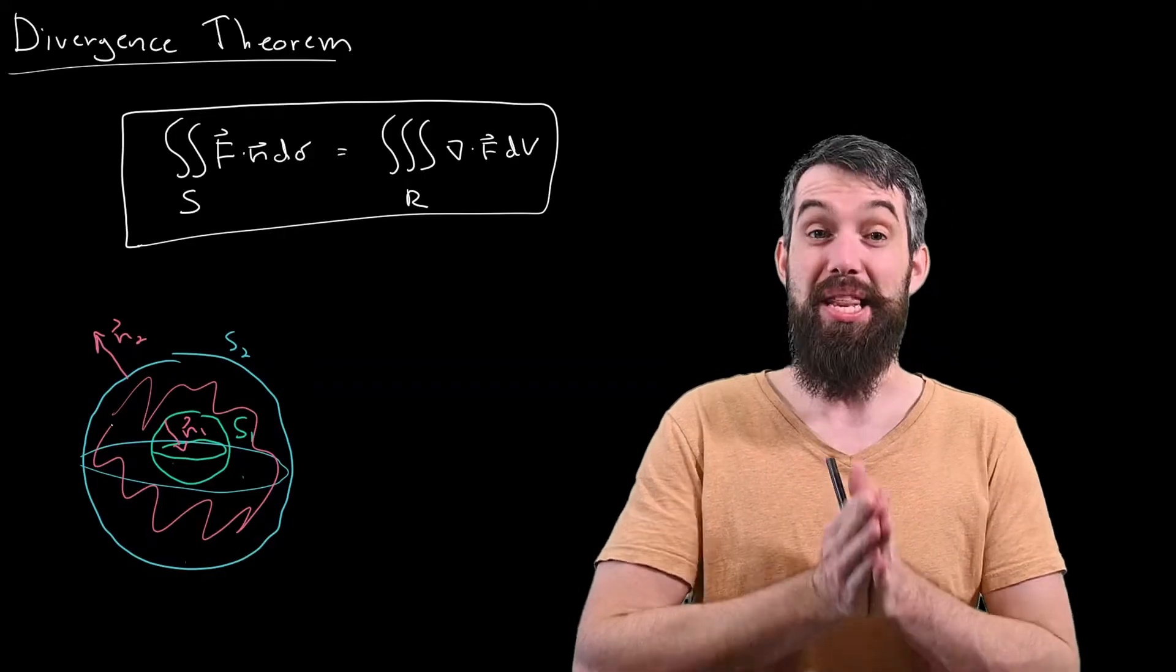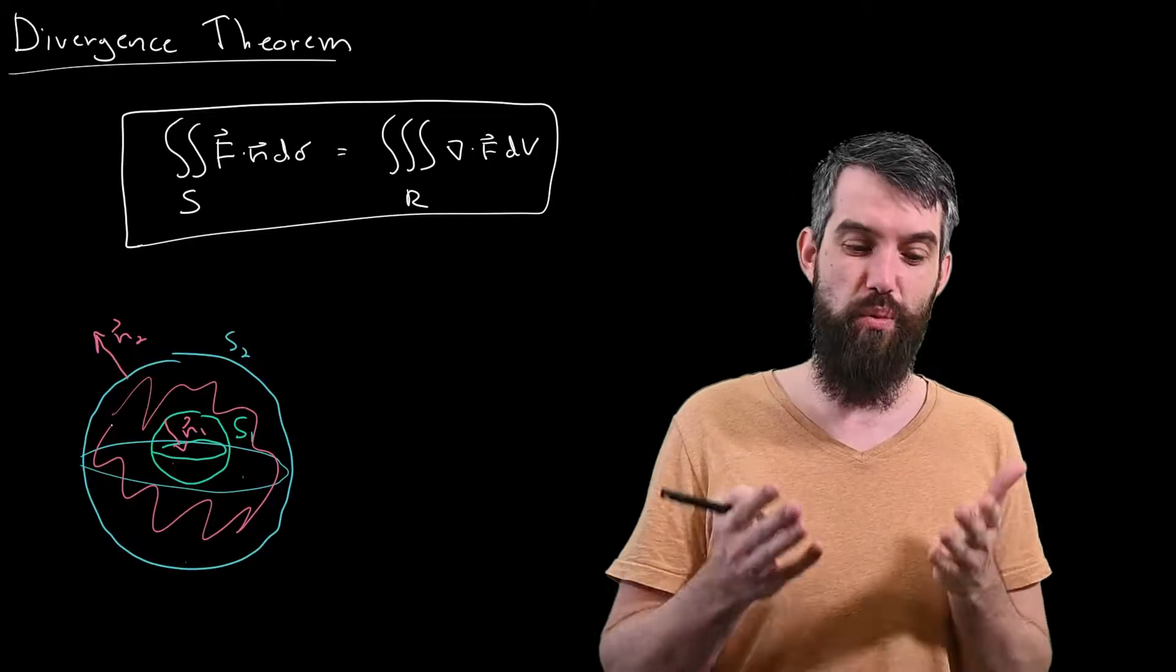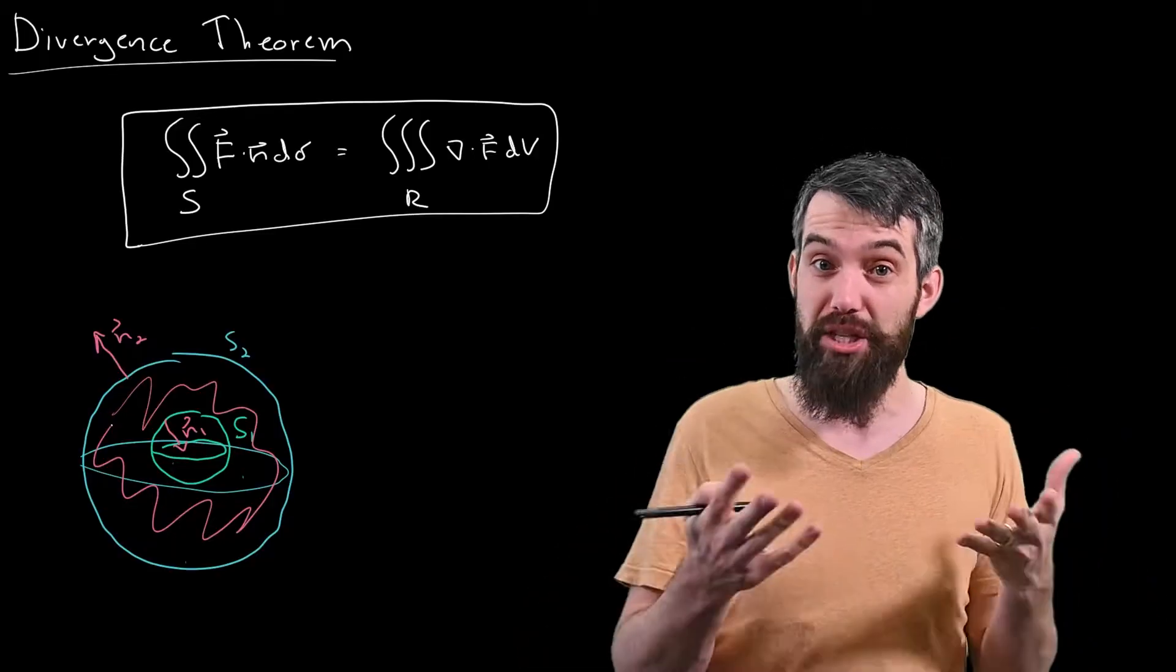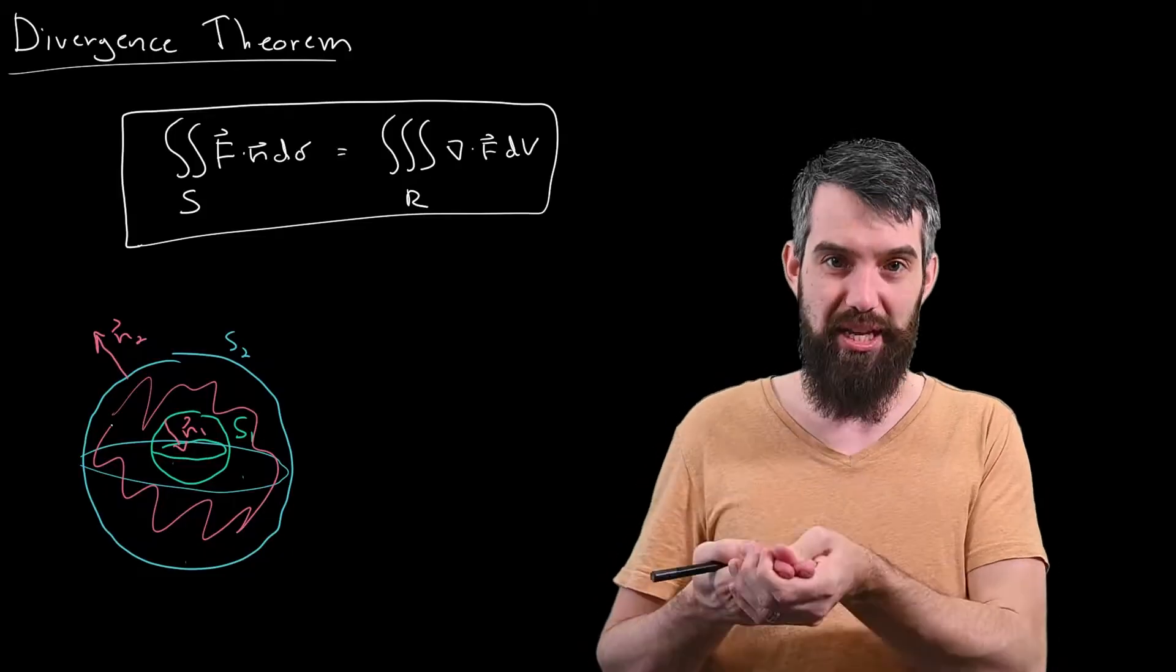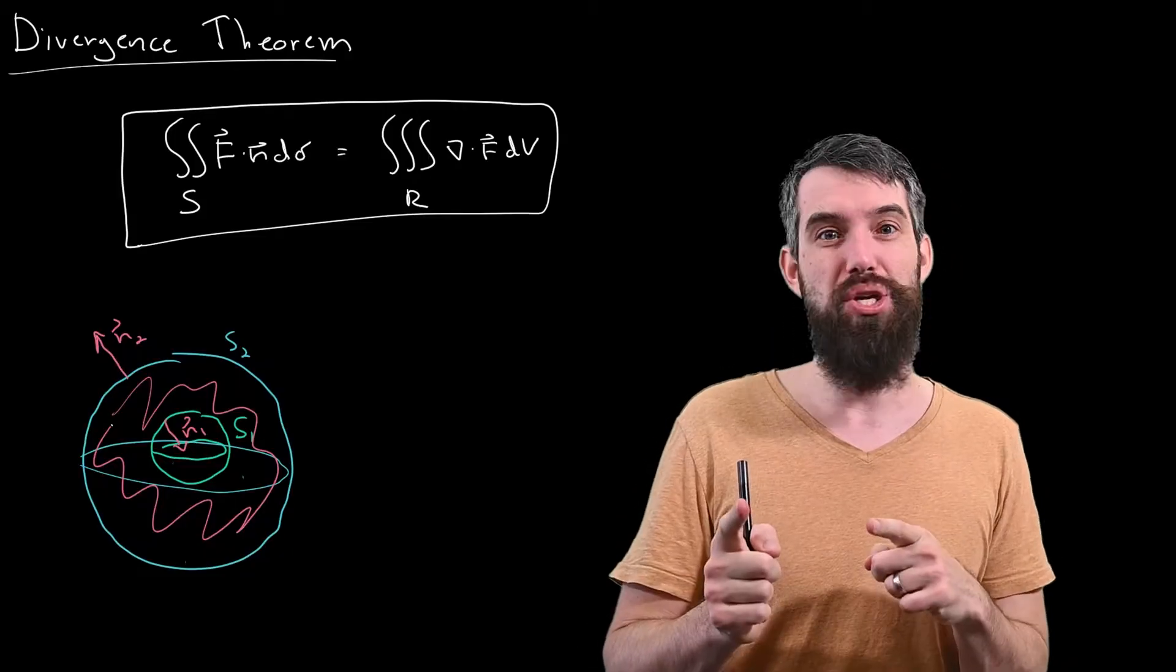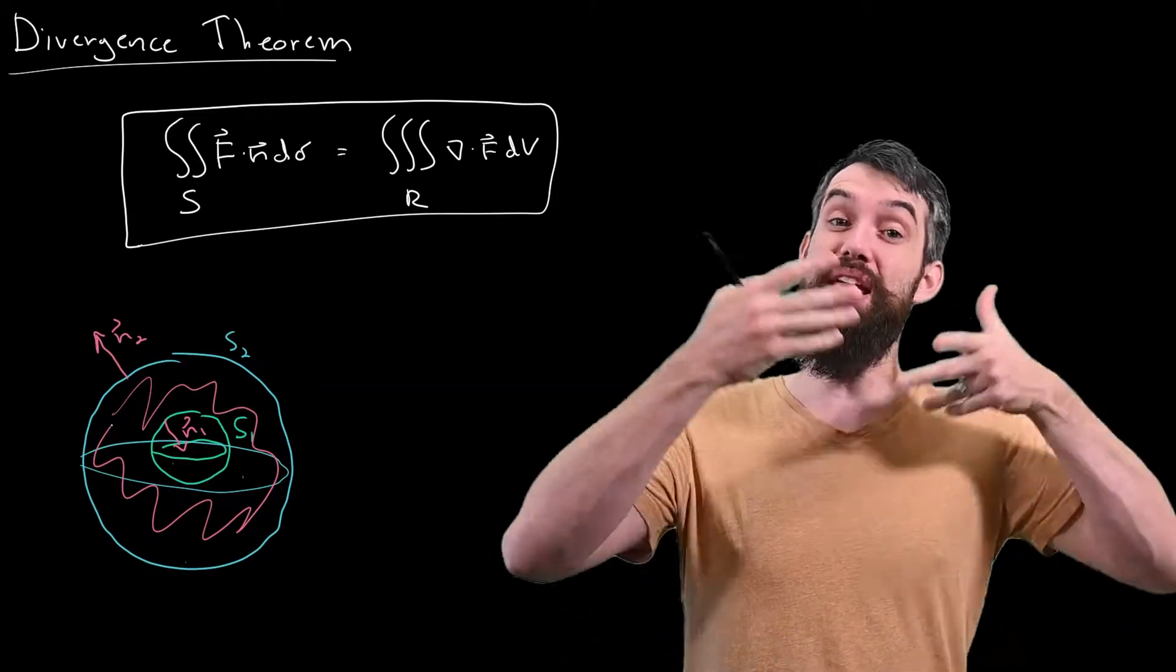What does the divergence theorem say in this context? So I'd written out already what the divergence theorem was. In general, it talked about the flux across the surface, that is, a surface integral of F dot N dσ, and said that was equal to a volume integral, a triple integral of the divergence.